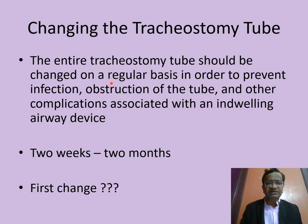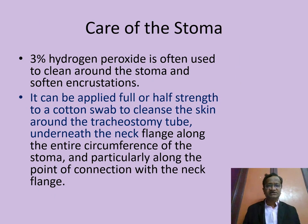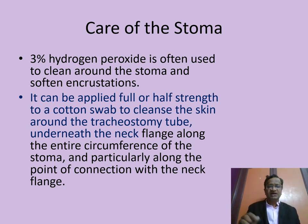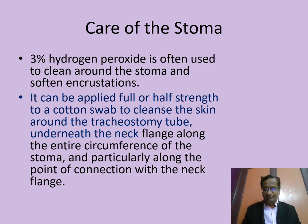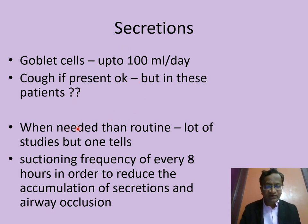The entire tracheostomy tube should be changed on a regular basis to prevent infections — typically every two to three weeks. The first change may be difficult; after that, routine care follows. For stoma care, use 3% hydrogen peroxide to clean around the stoma to remove encrustations, then apply betadine or appropriate antiseptic. Goblet cells produce up to 100 ml per day of secretions — normal, but the patient cannot cough them out when needed.